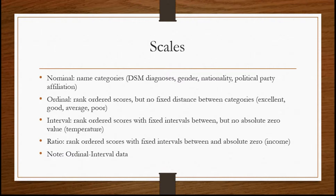Interval scales have rank-ordered scores with fixed intervals between them, but no absolute zero value — for example, temperature. We know that 34 degrees is half as much as 68 degrees. Temperature is sometimes confusing as an example because people ask about absolute zero, but technically we've never been able to record absolute zero — there's no such thing as the complete absence of all temperature. The last type of scale is ratio, similar to interval with ranked-ordered scores and fixed intervals, but with an absolute zero value. An example would be income — you could actually earn zero euros or dollars, so there's an absolute zero in a way that doesn't exist with temperature.